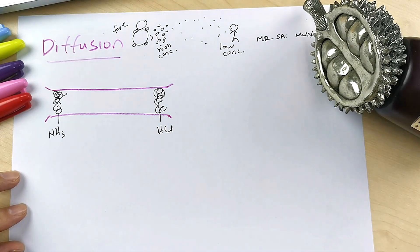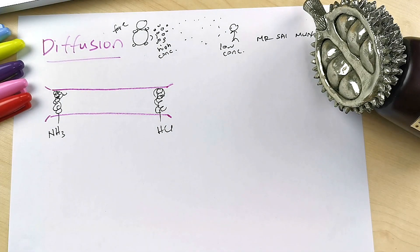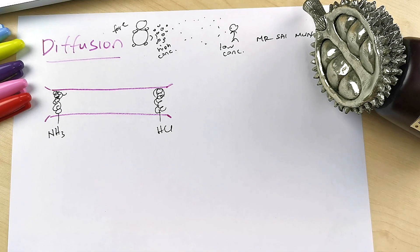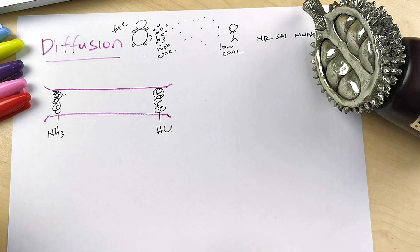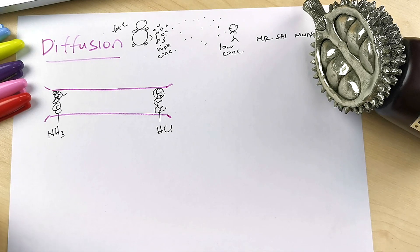So the question is, they always like to ask, which one diffuses faster? Where does the white fume form? And then they ask you to explain why.